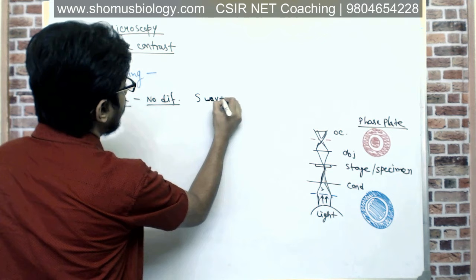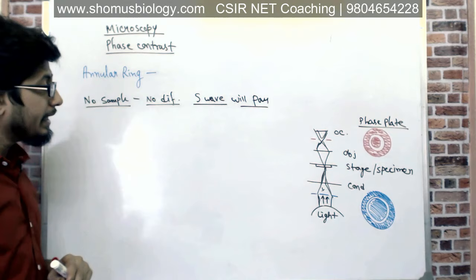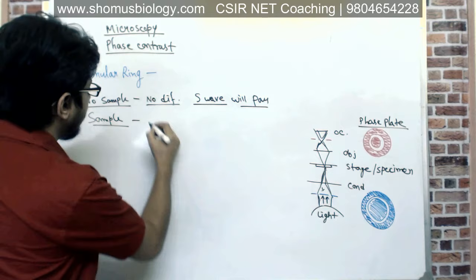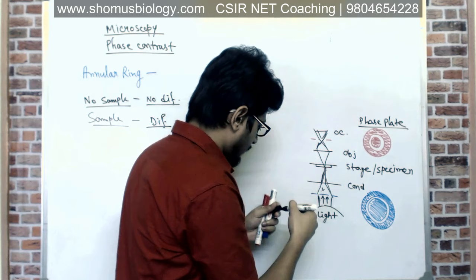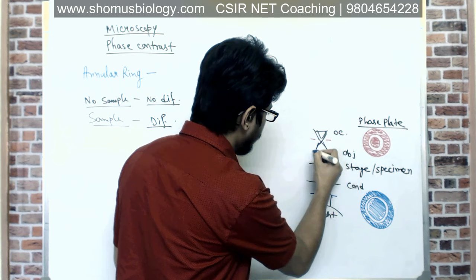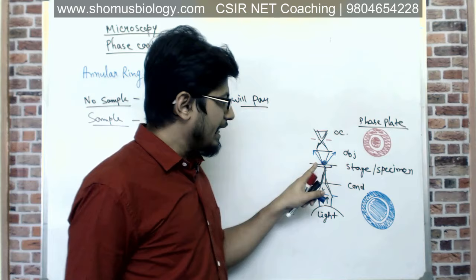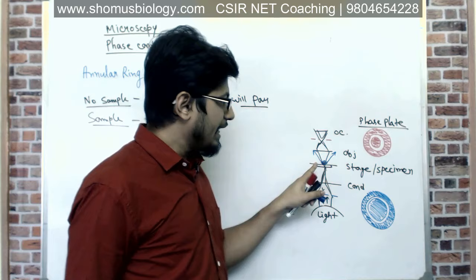So if no sample is present, the surround wave or S-wave passes normally. But if a sample is present, diffraction will occur — diffraction of light from the sample. Due to this diffraction of light, two waves are now created: one is the surround wave (S-wave) and the other is the diffraction wave (D-wave). The combination of these two waves is known as the P-wave.